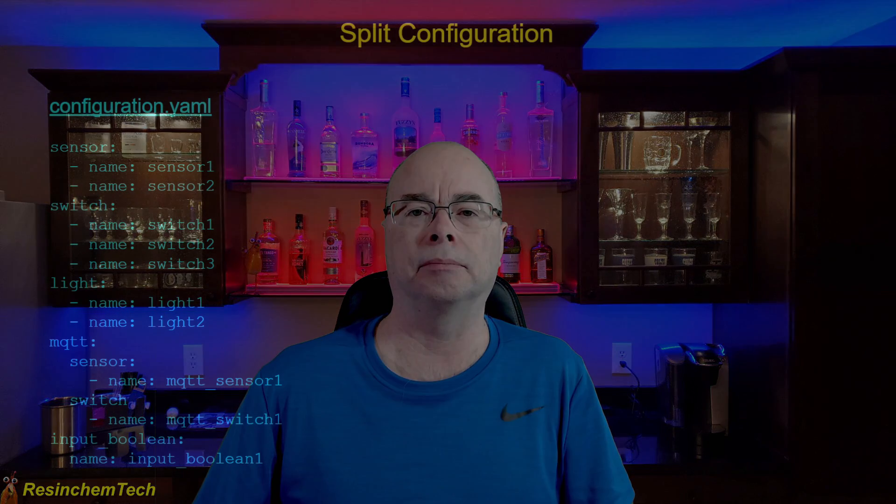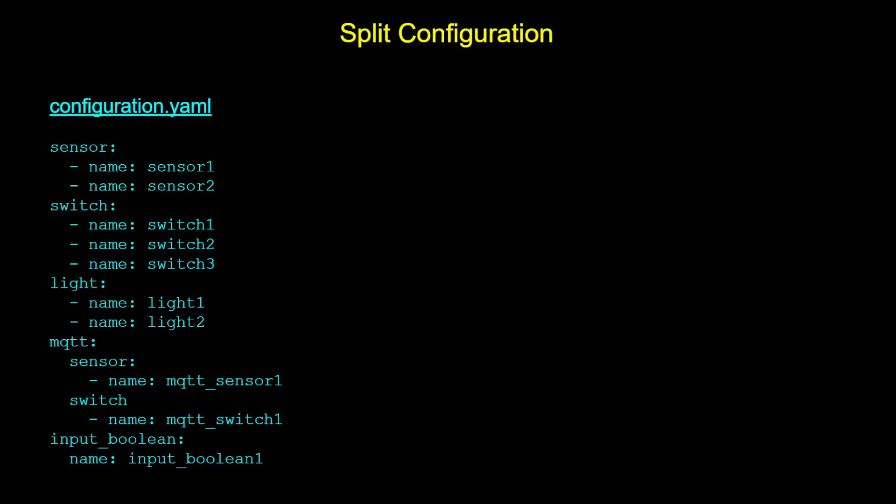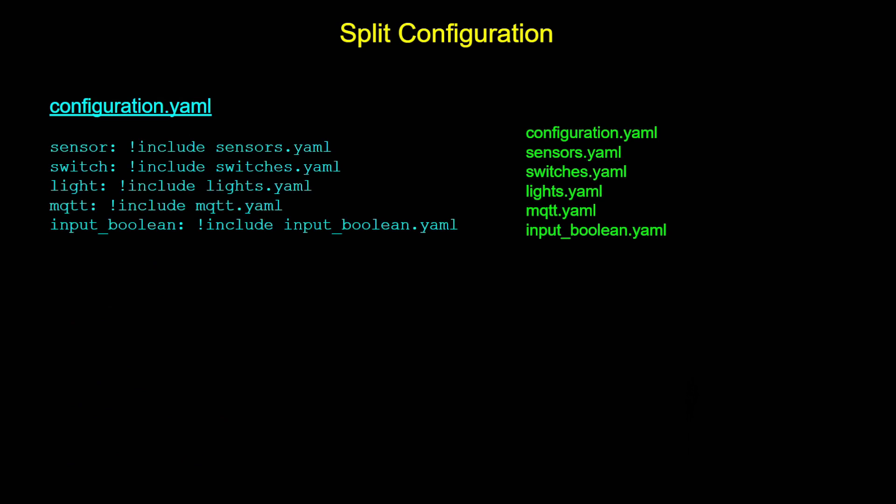Home Assistant packages offer yet another way to organize your manually configured YAML entities. It has some disadvantages and some advantages, and I'll talk about those along the way. Let's go ahead and get started and take a look at how Home Assistant packages are created and used and how they differ from a split configuration. Split configuration allows you to take things out of your one big configuration.yaml file and split them out into individual YAML files.